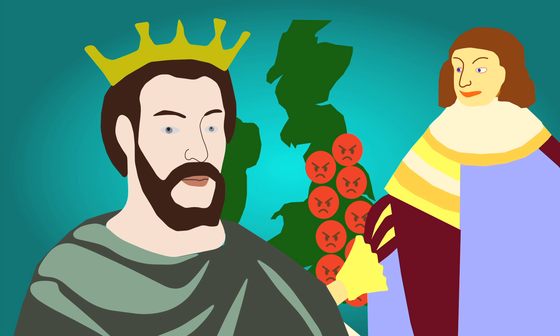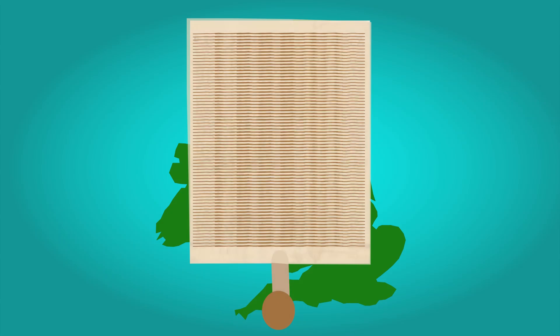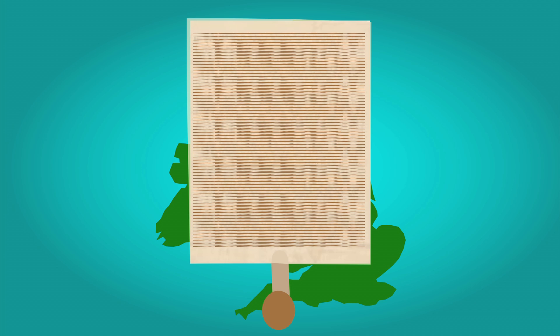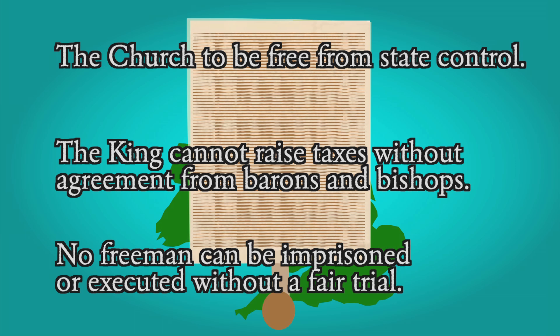The barons then rebelled against John and forced him to sign the Magna Carta, Latin for Great Charter, an agreement of 63 clauses limiting the king's power and focused on three main points: the church was to be free from state control; the king could not raise taxes without agreement from barons and bishops; and no free man could be imprisoned or executed without a fair trial. The document eventually led to the formation of our current parliament and the modern legal system.